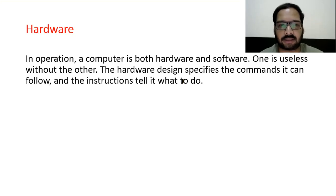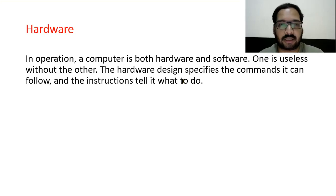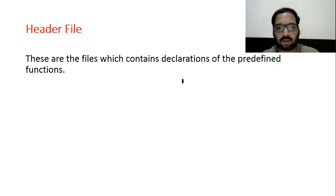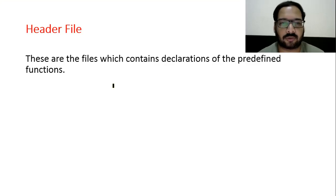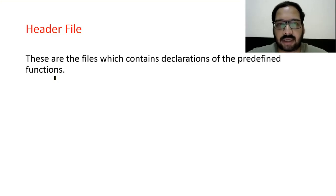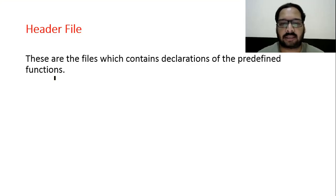Hardware: in operation, a computer is both hardware and software — one is useless without the other. The hardware design specifies the commands it can follow and the instructions tell it what to do. Header files are very important — used in every program. These are files which contain declarations of predefined functions. For example, stdio.h for printf and scanf, math.h for sqrt and pow, stdlib.h for exit. There are many header files created for different predefined functions.